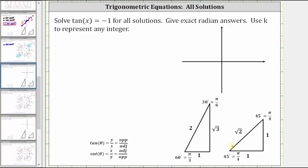The first step is to recognize that the tangent function value is negative. Since tangent theta equals y divided by x, y divided by x is negative when y is positive and x is negative, or when y is negative and x is positive. This means the solutions will be in the second quadrant or the fourth quadrant.